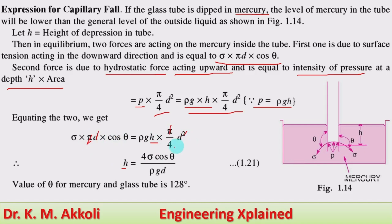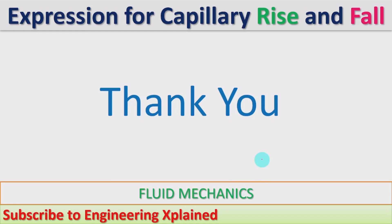The expression is the same as that of the capillary rise, but the angle of contact is different for capillary fall. The value of theta for mercury and a glass tube is 128 degrees — that is the only difference; the remaining expression is the same for both capillary rise and capillary fall. Thanks for watching Engineering Explained channel; if you like, share, subscribe, and comment.